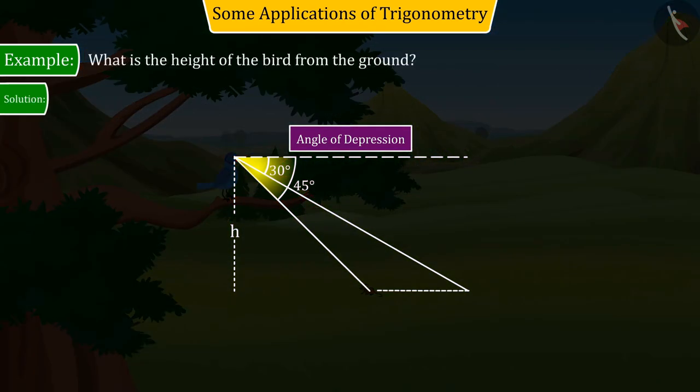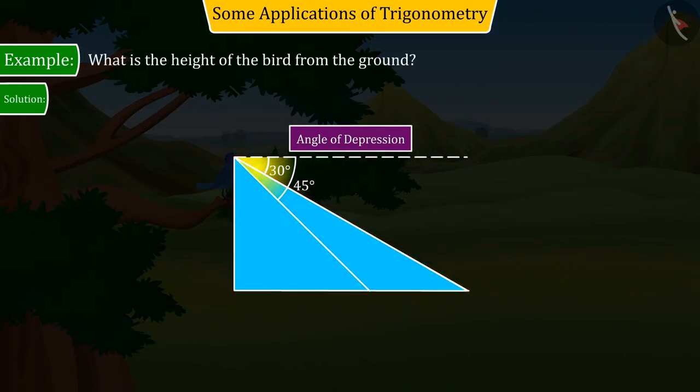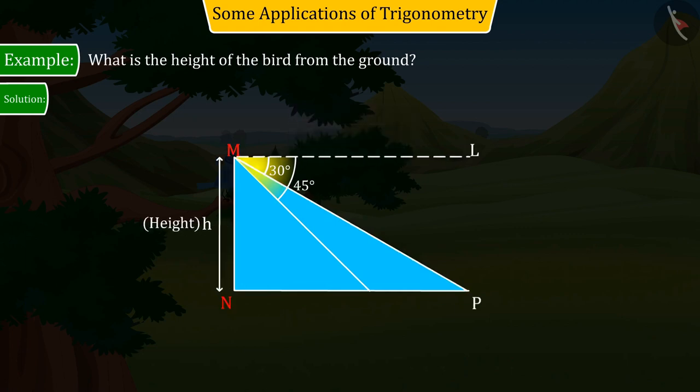With the help of the given information, let us construct the figure. Let MN be the height of the bird from the ground, denoted by H.